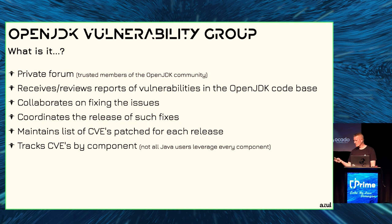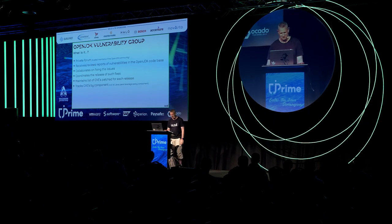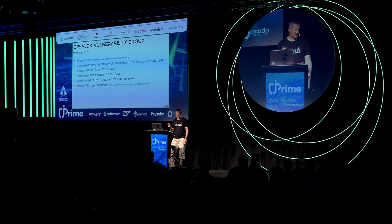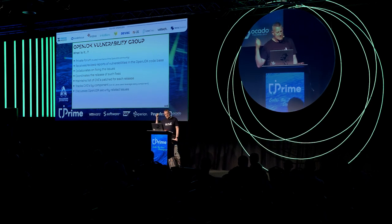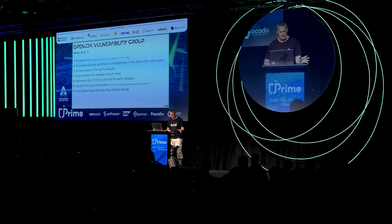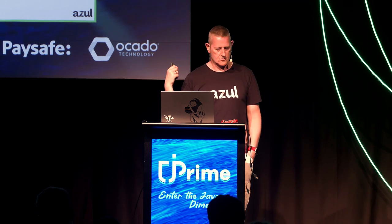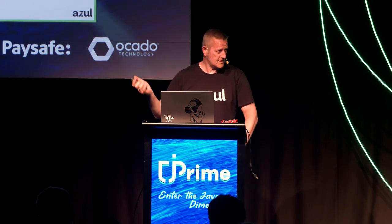Who is using J-Link to create their own version of the JRE? You really should do that. Who is using a JRE in production? You should use J-Link — we'll come back to that. The reason is that not all Java users use all components, so it makes sense to track CVEs down to the component level. The OpenJDK Vulnerability Group also discusses security-related issues, though they don't actively test the OpenJDK source code themselves.